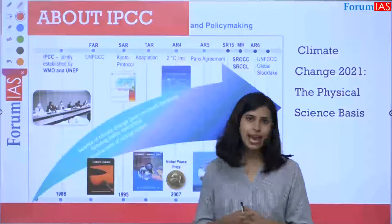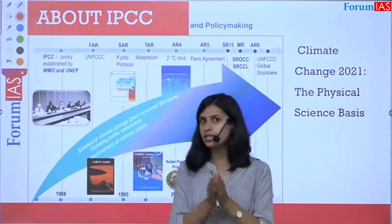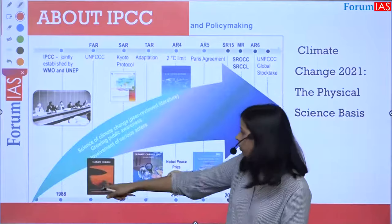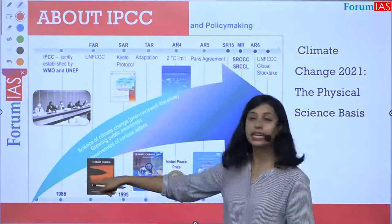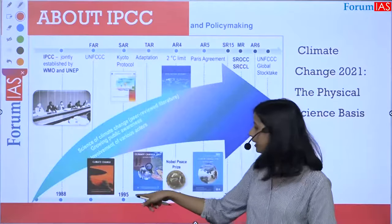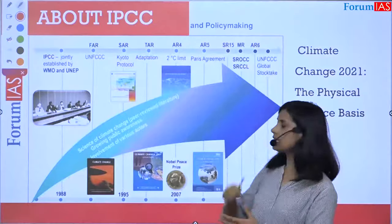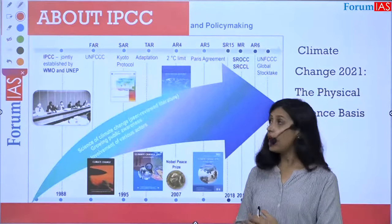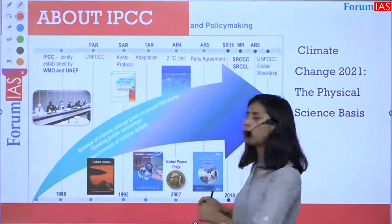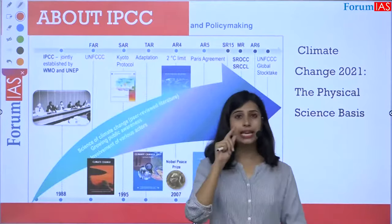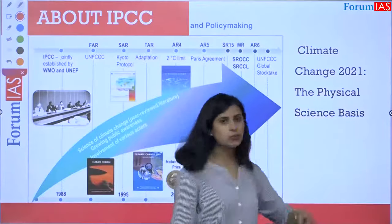Now let's understand the history of IPCC. Up until now, IPCC has released six reports, starting from 1988. After 1995, the first report was released, and now in 2021, the sixth report has been released. It was released around the time of the Kyoto Protocol and before the Paris Summit. The 2021 report is called 'Climate Change: The Physical Science Basis.'